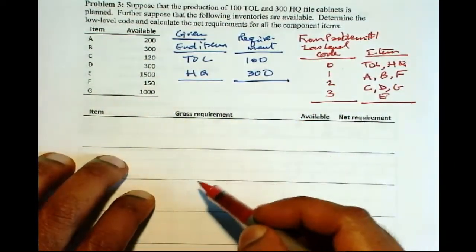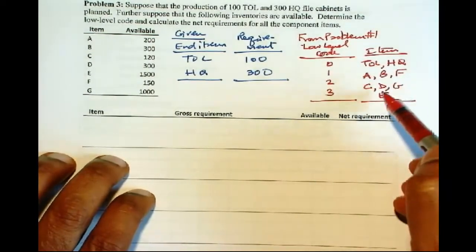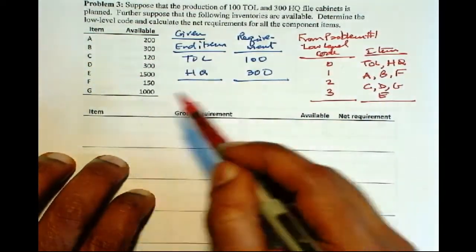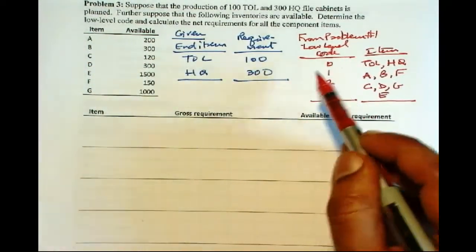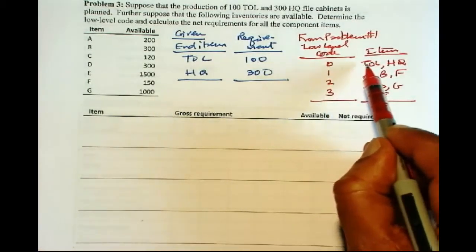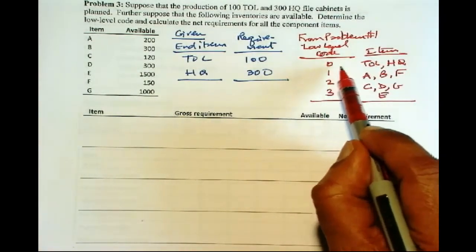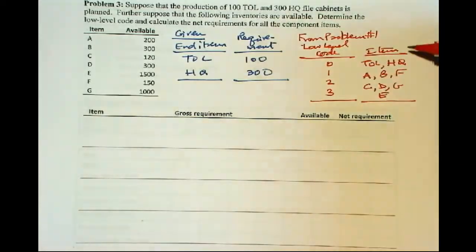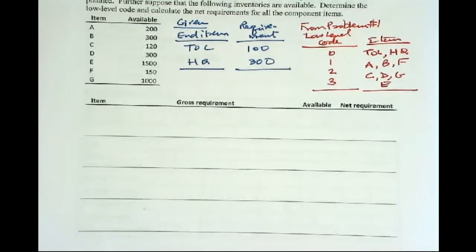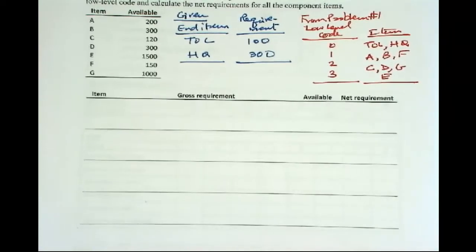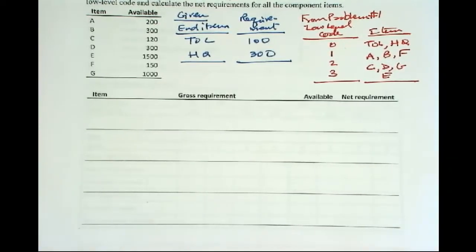So we need to do the computation in this order, not in alphabetical order. But you have to make sure that you do the computations for one level starting from level 0, all the items. And then you move down to the next level. By doing the computations in this order, you will always make sure that when you process a particular item, the requirements for all its parents are already computed and they are available.